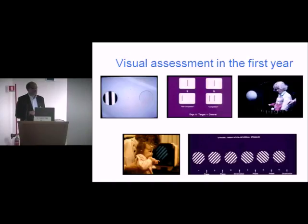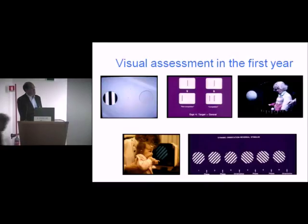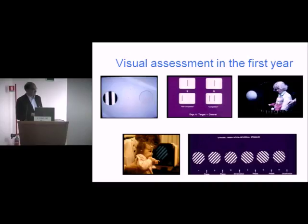This test is called fixation shift: you can see the ability of the child to shift attention from a central target to a peripheral target. This is easy when the central target disappears — called non-competition — and is already found subcortically soon after birth. It becomes more difficult when the central target is still present when the peripheral one appears — called competition — and you have to wait up to four or five months for these responses. We also measure visual fields and electrophysiological responses to stimuli like phase-shift or orientation-shift.